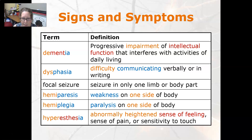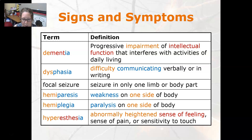Hemiparesis is weakness on one side of the body. Hyperesthesia is an abnormally heightened sense of feeling, sense of pain, or sensitivity to touch.